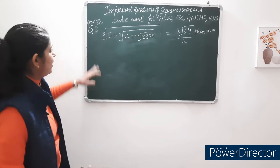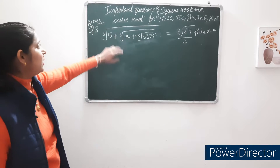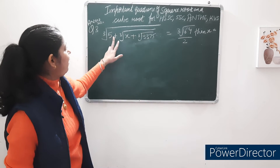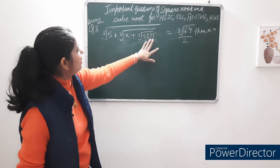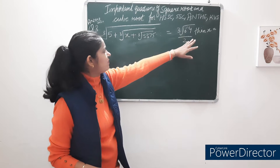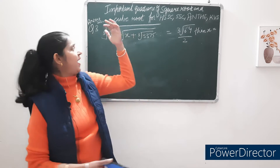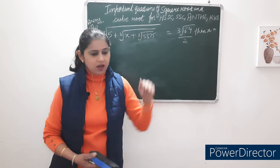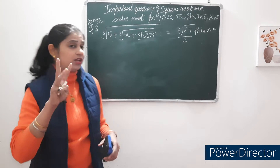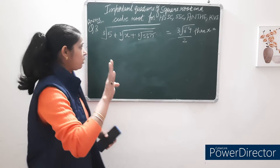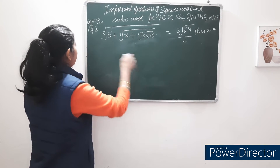Next question is taken from the NTI exam 2020: cube root of 5 + cube root of x + cube root of 3375 = cube root of 64, divided by 2. You have to find x. In cube root, हम 3 के pairs बनाते हैं — we make pairs of 3 using LCM.